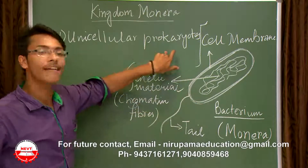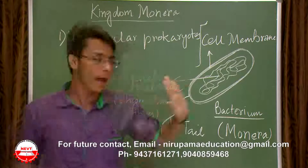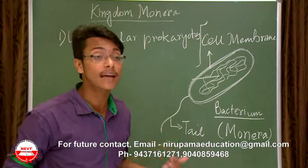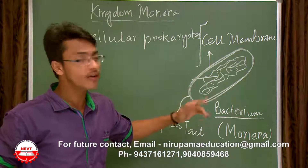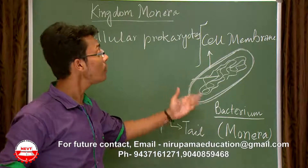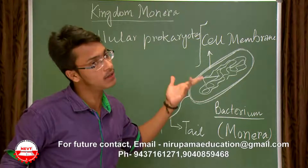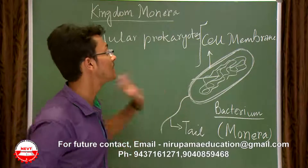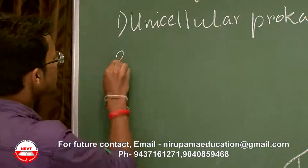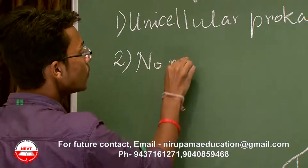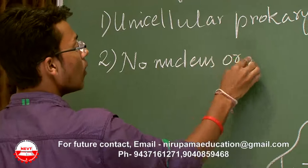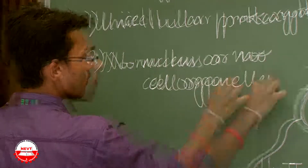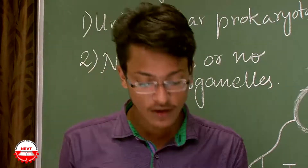Unicellular means one cell, and prokaryotes means primitive nucleus. The second characteristic: there is no nucleus or any cell organelles. Can you find any mitochondria? No. Any vacuole? No. Any distinct endoplasmic reticulum? No. There are no cell organelles and no nucleus present in Monerans.